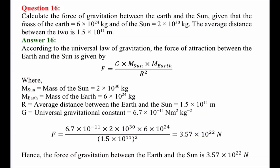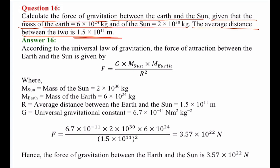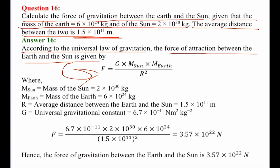Question number 16: Calculate the force of gravitation between the earth and the sun. The mass of the earth is 6 times 10 to the power 24 kg, the mass of the sun is 2 times 10 to the power 30 kg, and the average distance between the two is 1.5 times 10 to the power 11 meters. These values are already given. According to the universal law of gravitation, the force of attraction is given by F equals GM1M2 divided by R squared.